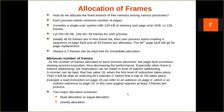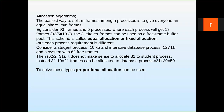Now we come to the allocation schemes. There are two major types: fixed allocation (also called equal allocation) and priority allocation. In equal allocation, consider 93 frames and 5 processes: 93 divided by 5 gives 18.8, so each process gets 18 frames and the remaining 3 frames are kept as a free frame buffer pool. The easiest way to split M frames among N processes is to give everyone an equal share of M/N.